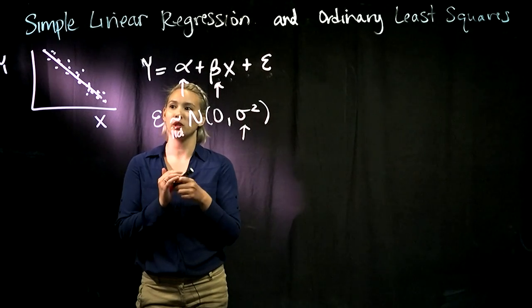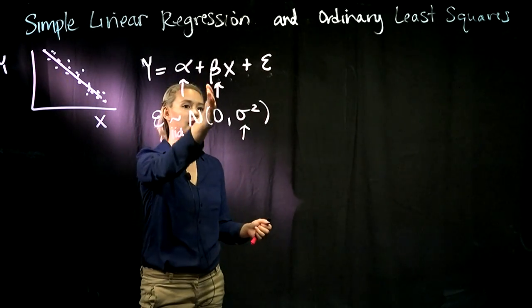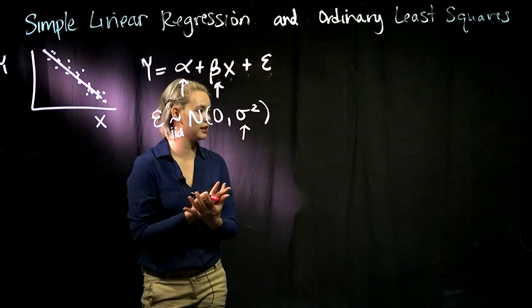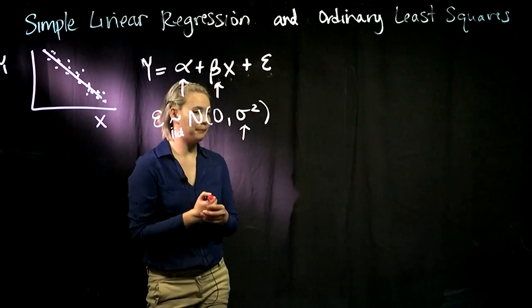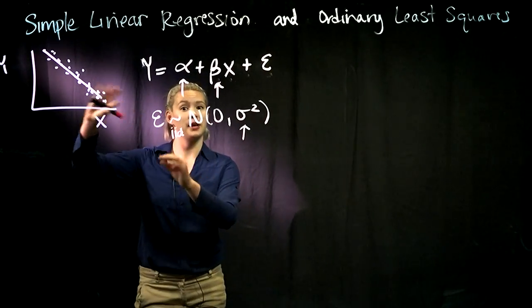We know that we're looking for this line, and we're looking for the alpha and the beta and the sigma squared that characterizes it. But how do we actually find the line that best fits this data?